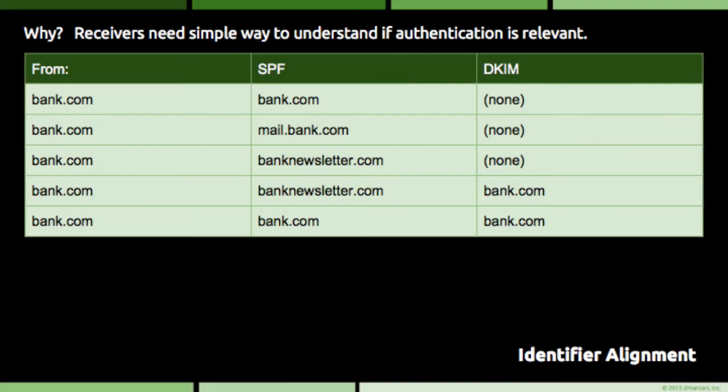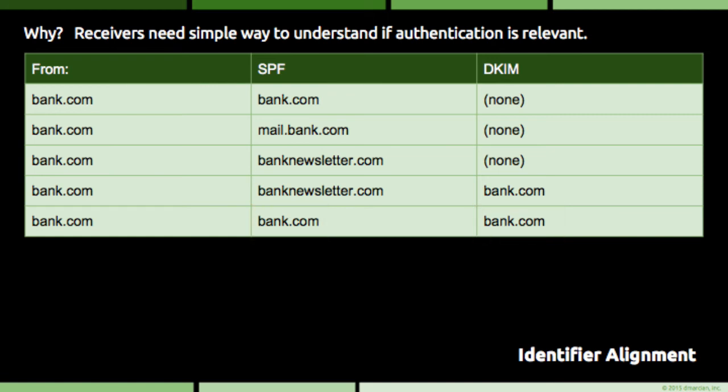This fifth example shows an email that passes DMARC fully. Both SPF and DKIM yielded authenticated identifiers of bank.com. The receiver only cares about finding a positive signal, so having two signals is good, but doesn't mean anything more than a single positive signal. The reason for having both technologies yield the right results is that it allows email to remain DMARC compliant even if one of them, for whatever reason, is unavailable or fails.